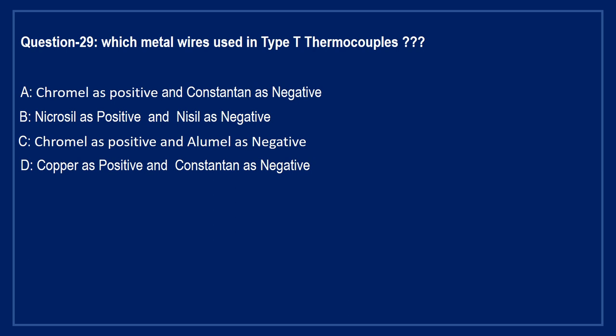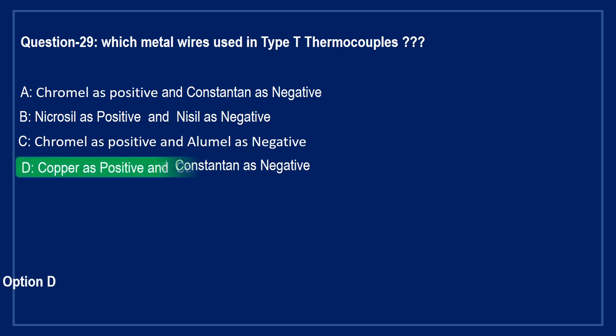Question: which metal wires are used in type T thermocouples? Option A: chromel as positive and constantan as negative. Option B: nicrosil as positive and nisil as negative. Option C: chromel as positive and alumel as negative. Option D: copper as positive and constantan as negative. The right answer is Option D — T-type thermocouples are made of copper (positive) and constantan (negative).